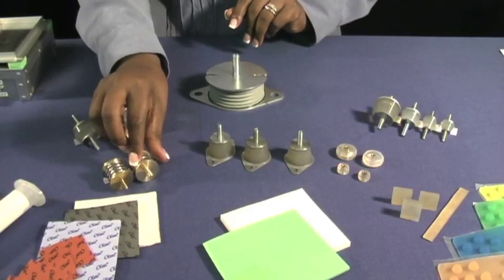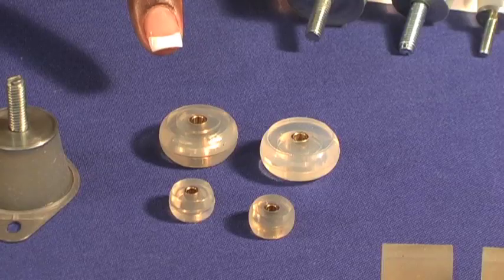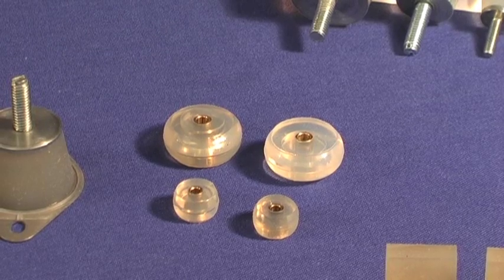Our silicone gel bushings are used to attenuate micro vibrations and light shock. They are perfect for PCBs, disk drives, and small electronics.